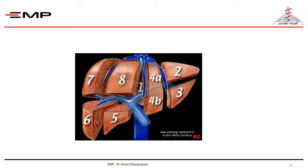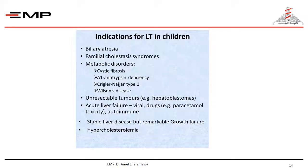For infants, two segments from the left lobe are usually removed from the donor and transplanted into the recipient, while in older children and adults, four segments from the right lobe are required. As shown in the table, the indications for liver transplantation in children include several conditions, and biliary atresia is the most common indication.